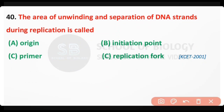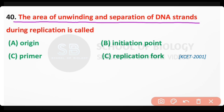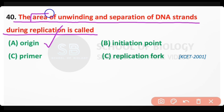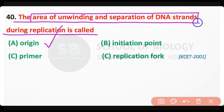Question number 40: The area of unwinding and separation of DNA strands during replication is called — origin of replication, initiation point, primer, or replication fork? The correct answer is option A: the area of unwinding and separation of DNA strands during replication is known as the origin of replication.